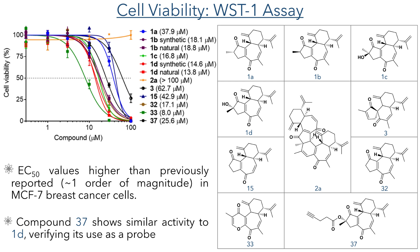Compound 2A, which is dimer curcuzone, did not show any ability to reduce cell viability, likely due to its large size preventing it from binding to the target protein. Compound 3, while showing some activity, was much less potent than the other compounds studied, likely due to the spirocyclic enone in place of the dienone, which is present in all of the compounds that showed potent anti-cancer activity.